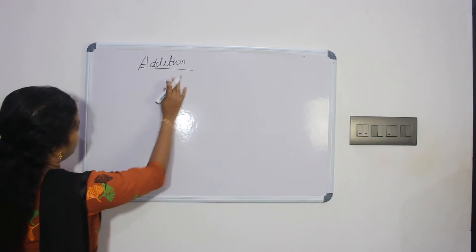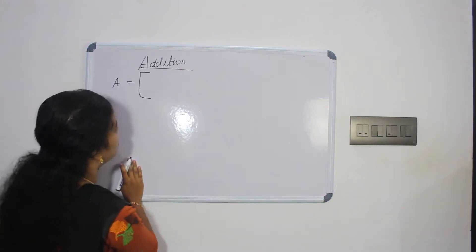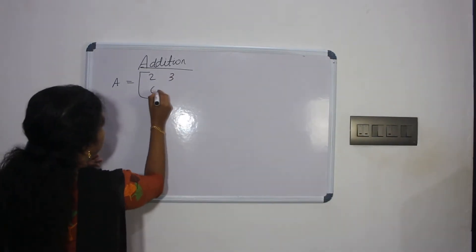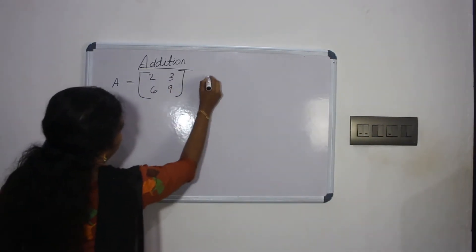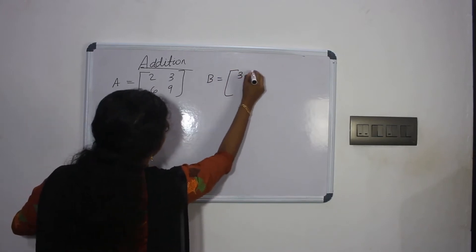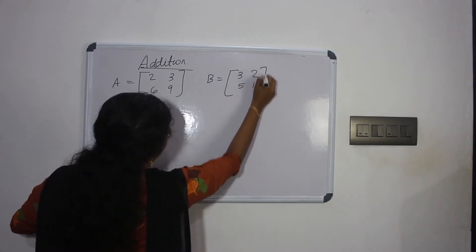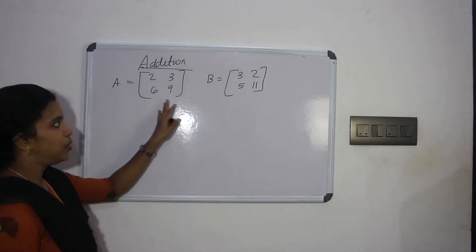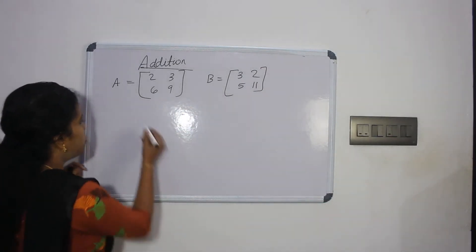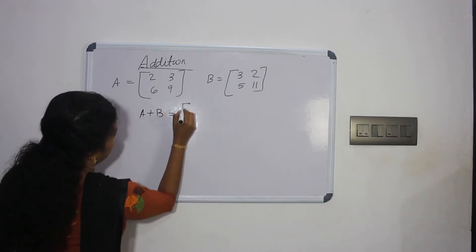Let's take an example. First we will start the addition with a 2x2 matrix. Matrix A is: 2, 3, 6, 9. Matrix B is: 3, 2, 5, 11. Now we have two 2x2 matrices. We will compute A plus B by adding corresponding elements.